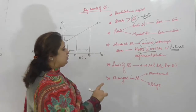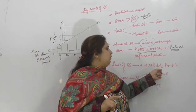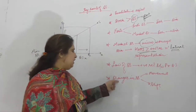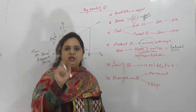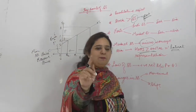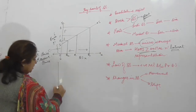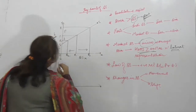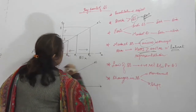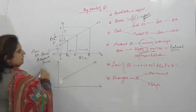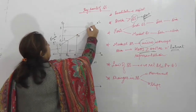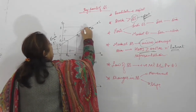Now a very important topic — Changes in Supply. दो तरह की changes होती हैं: Movement और Shifting. Movement कब होगी? Own price के कारण से — और बाकी factors क्या रहते हैं? Constant.